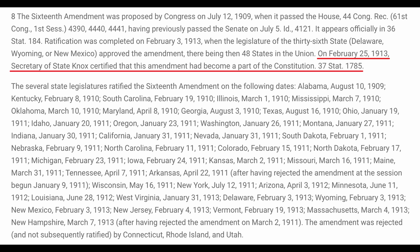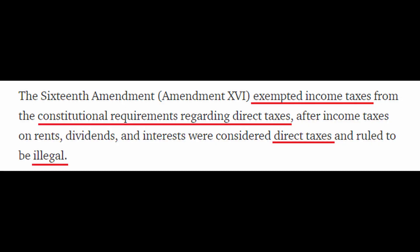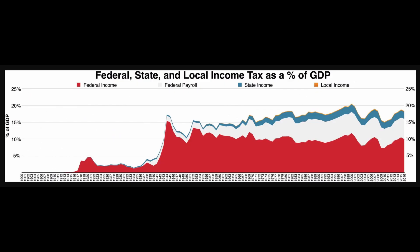The 16th Amendment became part of the constitution on February 25th, 1913. The 16th Amendment exempted income taxes from the constitutional requirements regarding direct taxes, after income taxes on rents, dividends and interests were considered direct taxes and therefore ruled to be illegal.